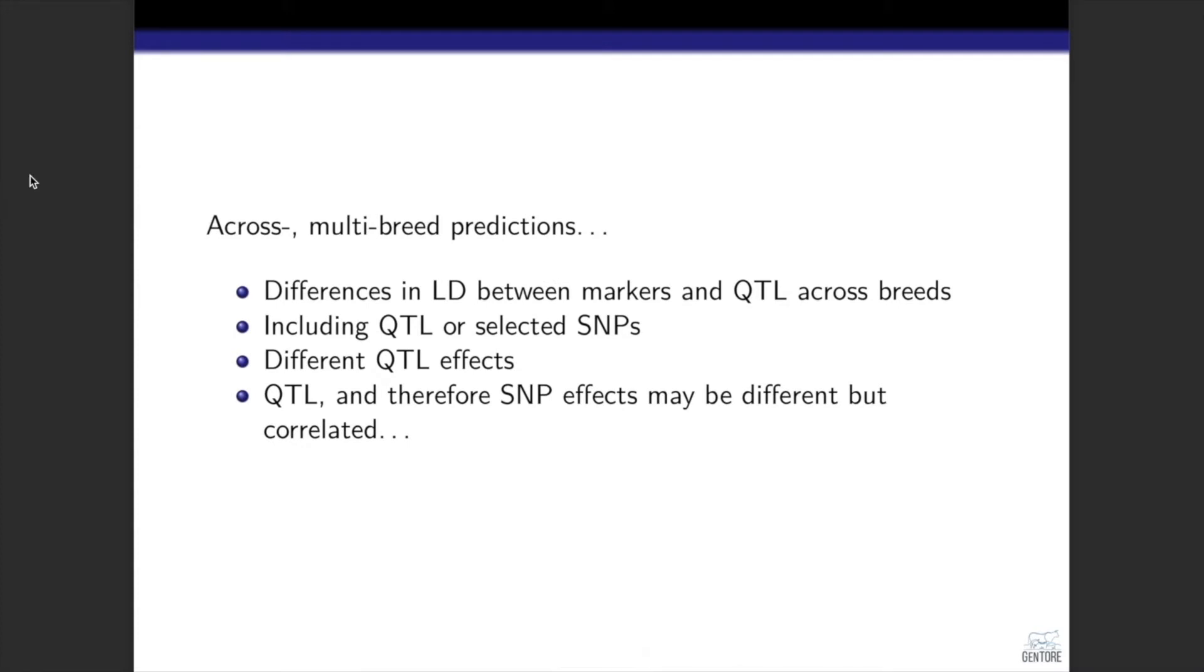When we combine data from multiple breeds to form a reference population, we rely on SNP-QTL linkage disequilibrium across the breeds, but that could be different for different breeds. To overcome this LD difference issue, we can include QTL or SNPs in high linkage disequilibrium with QTL, but this includes an implicit assumption that the QTL effects are the same.